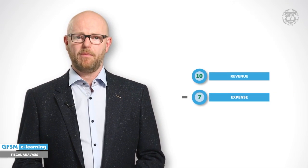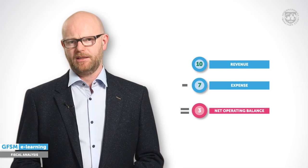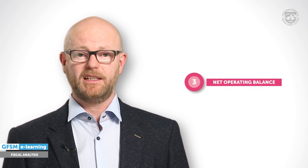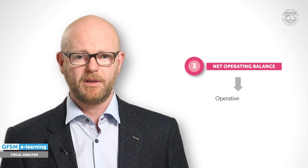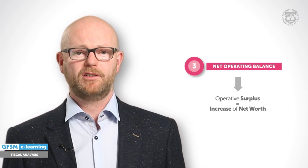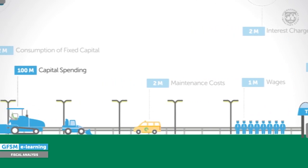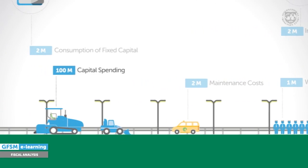Subtract the expenses from the revenue and we are left with the GFSM balancing item called the net operating balance. The 3 million surplus is an indicator of the operational performance. It means the government has improved its net worth from operating the toll road.